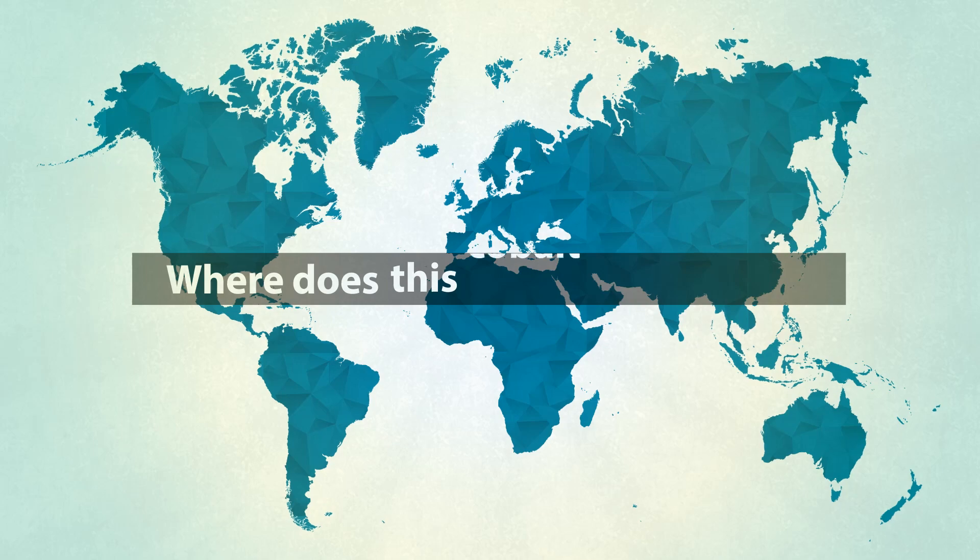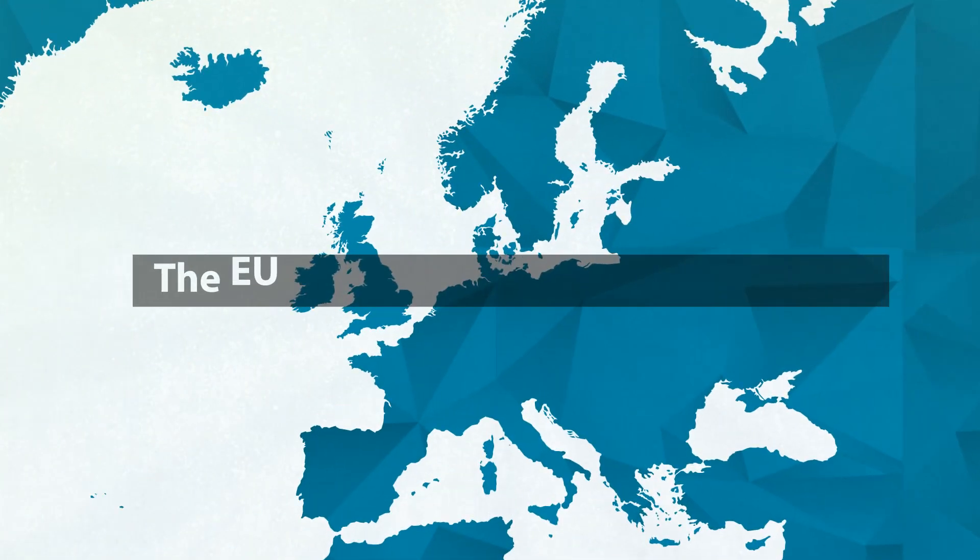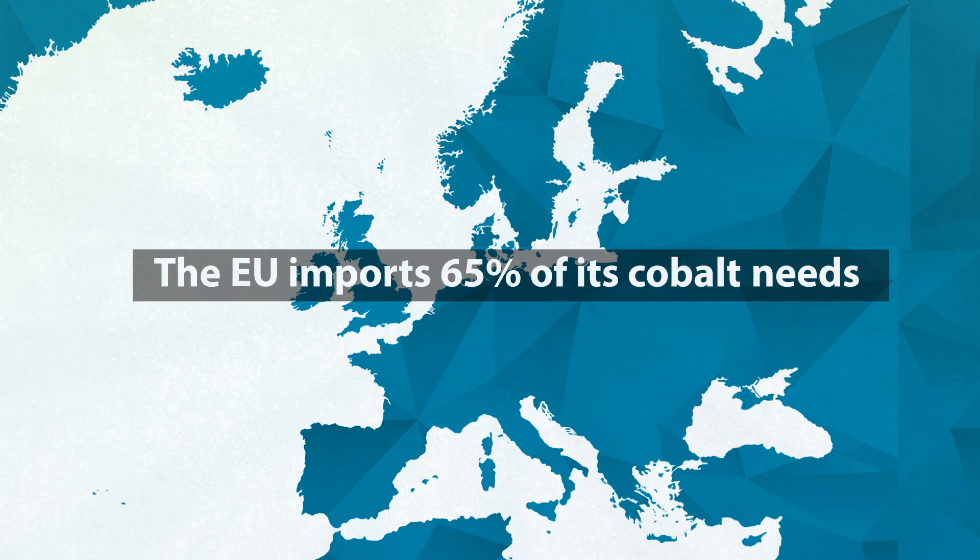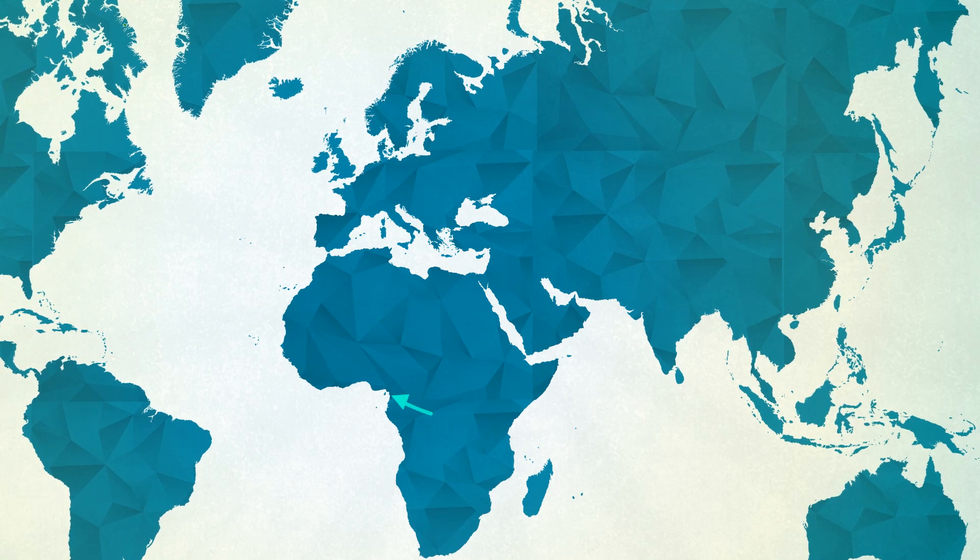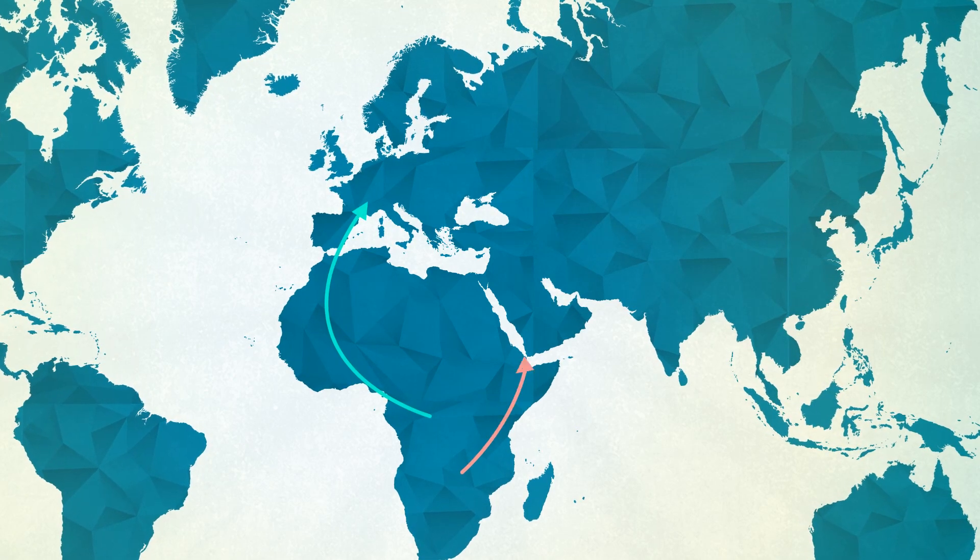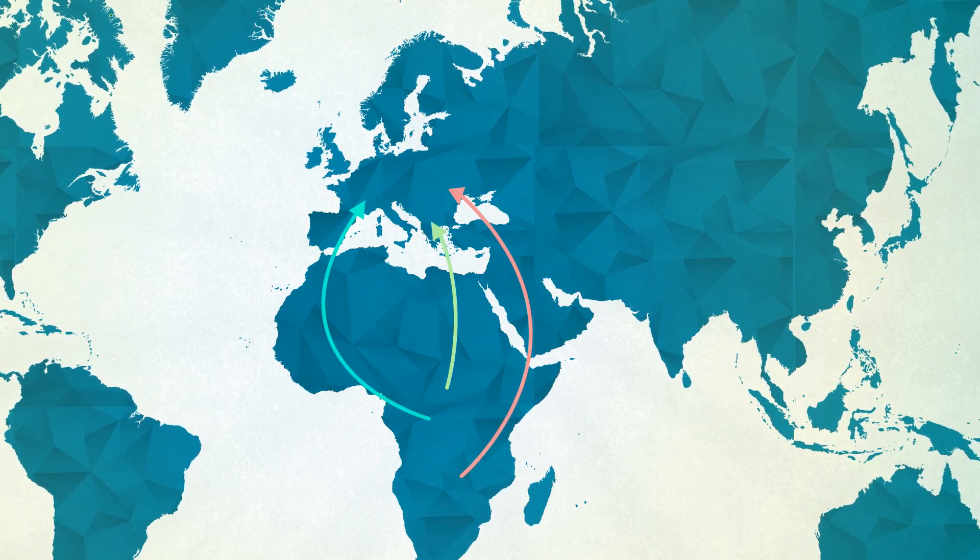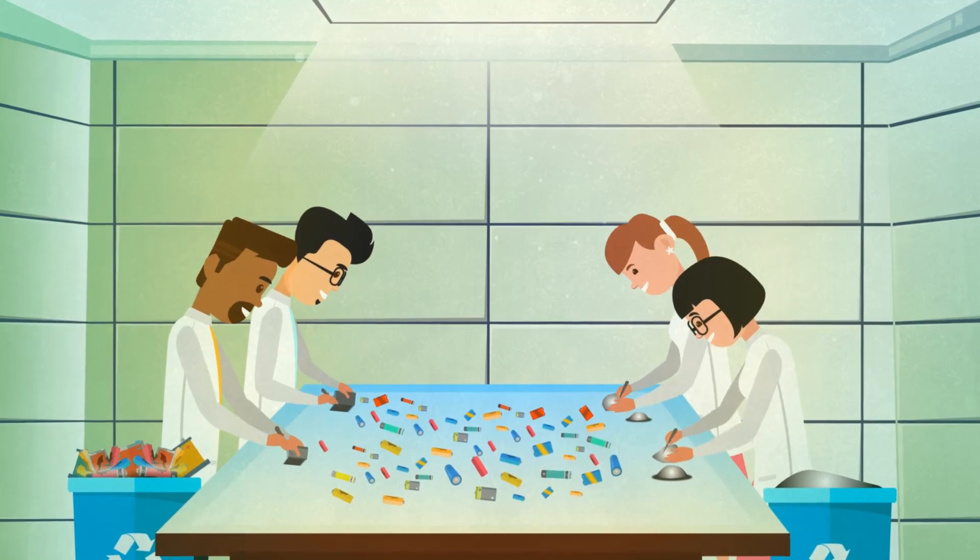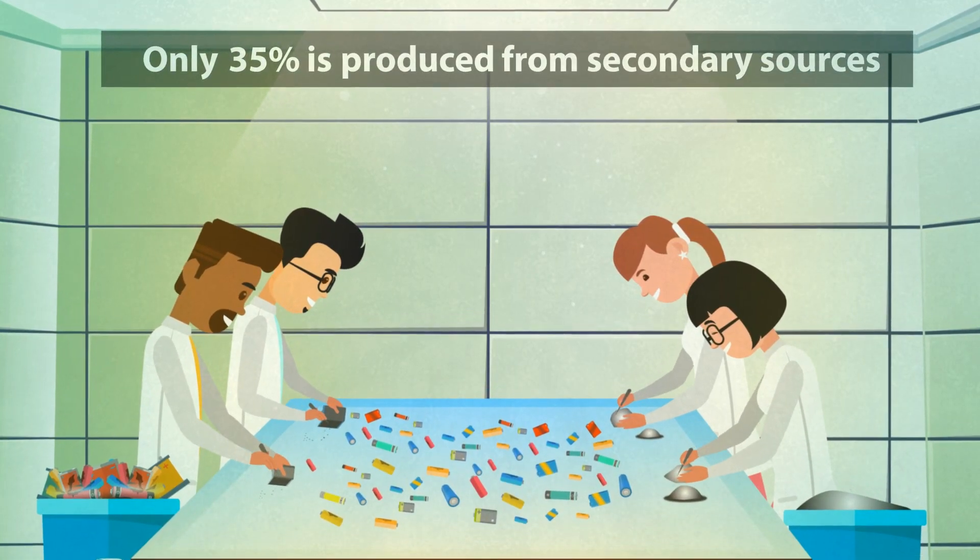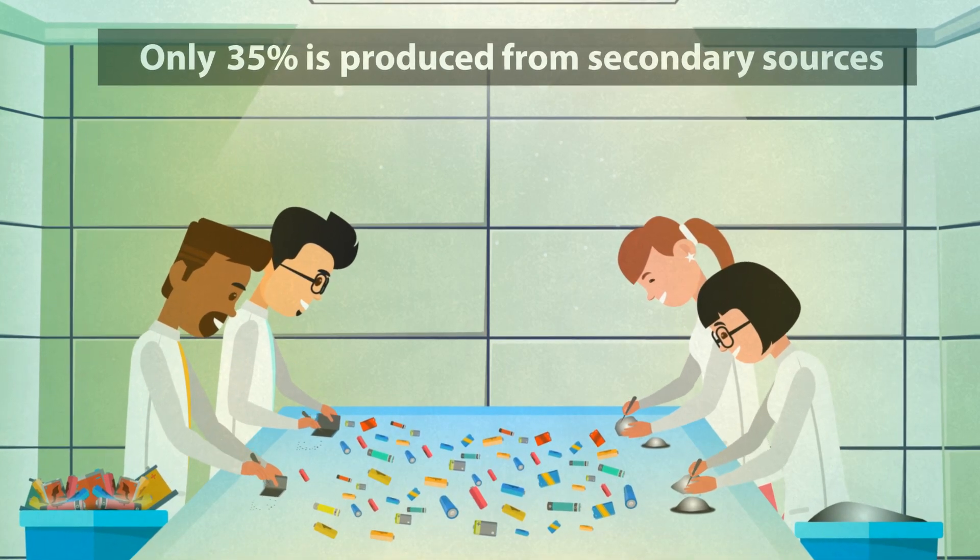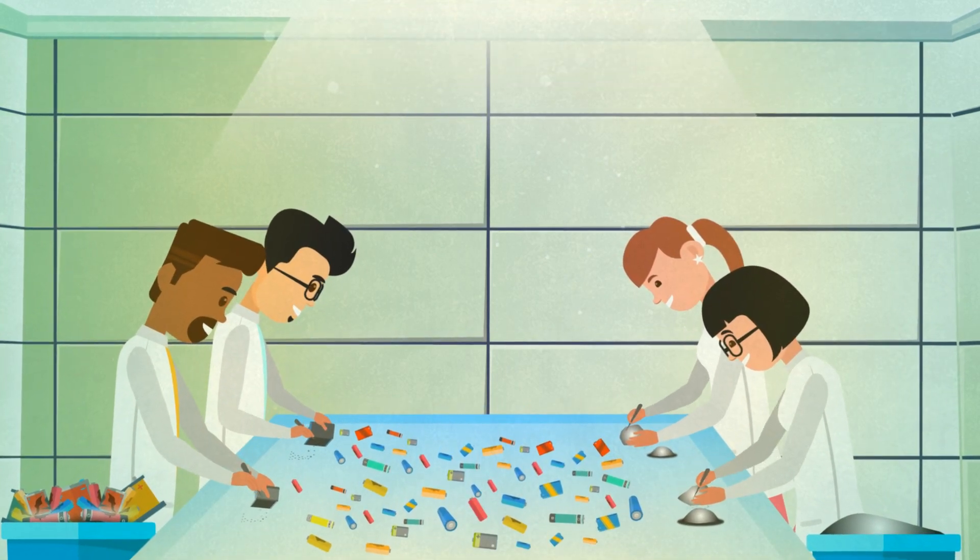But where does this cobalt come from? Currently, the European Union imports about 65% of its cobalt needs, approximately 10,000 tonnes per year, from countries such as Democratic Republic of the Congo, Zambia, or Central African Republic. Only 35% is produced from secondary sources, such as the recycling of spent batteries, super alloys, and hard metals.